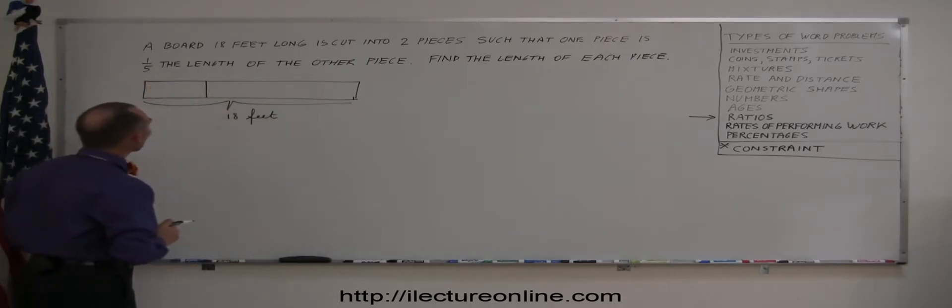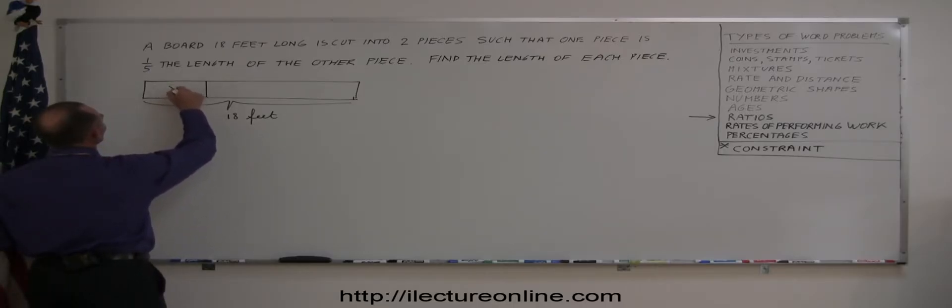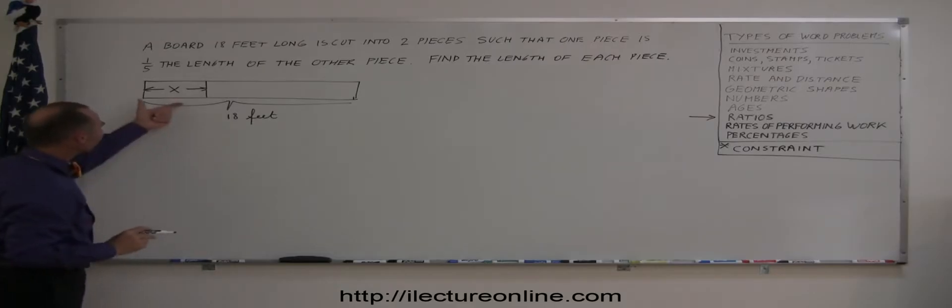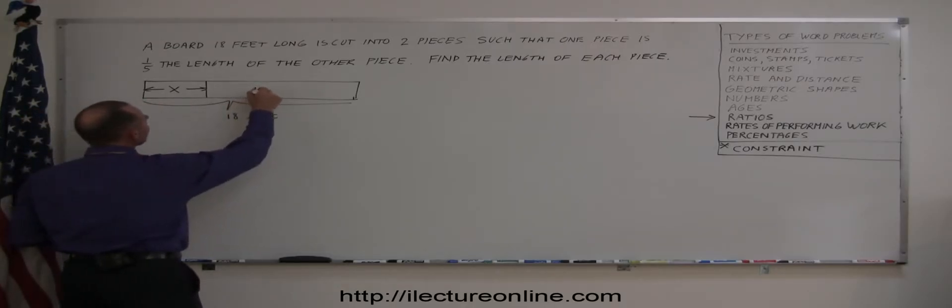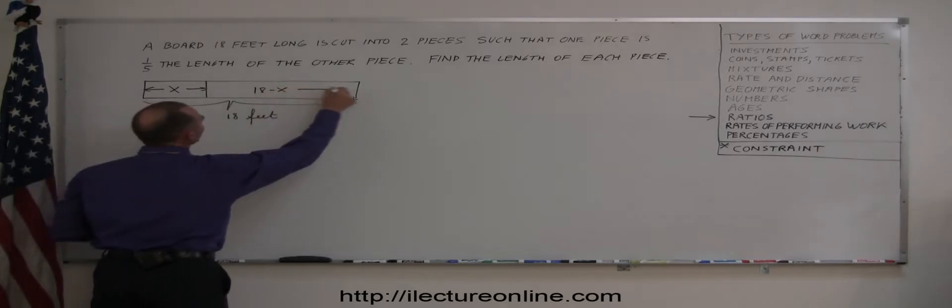So this is 18 feet and the short end is one-fifth the size of the big end. Alright, so if we call this x in length, if you let x be the length of the short piece then 18 minus x would be the length of